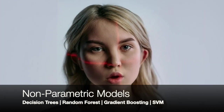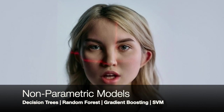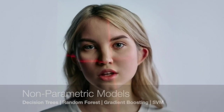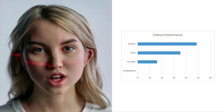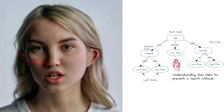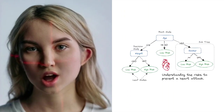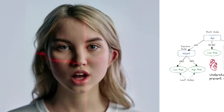Now, let's shift our focus to non-parametric models like decision trees, random forests, and gradient boosting. These models possess a flexible structure that adapts to the complexity of the data. They can handle feature engineering effectively and can even ignore unimportant features without causing overfitting. For instance, decision trees use a hierarchical structure of nodes and branches to split the data based on feature values.